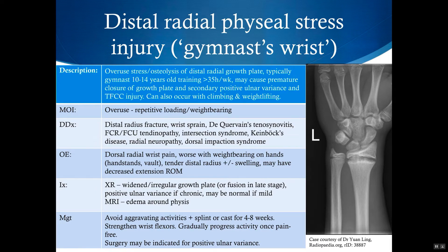In early stages, x-rays can be normal, in which case an MRI would show some edema around the growth plate. As the condition progresses, x-rays will show widening and irregularity of the growth plate, and eventually the growth plate might fuse. If the distal radius growth plate fuses but the ulna continues to grow, they'll end up with a longer ulna, or positive ulnar variance, which can cause other injuries like TFCC tears. The main treatment is avoiding weight-bearing on the hands. A splint or cast can help expedite pain relief. Once the pain's gone, they can gradually resume activity. If there is ongoing pain or positive ulnar variance, then surgery might be indicated.